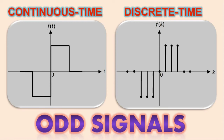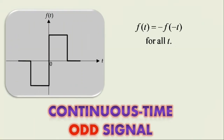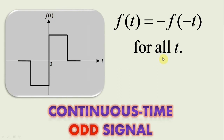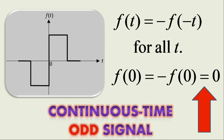Mathematically, a continuous time signal F(t) is said to be an odd signal if it satisfies the condition F(t) = -F(-t) for all t. In view of this condition, it is worth noting that a continuous time odd signal must necessarily be zero at t = 0.